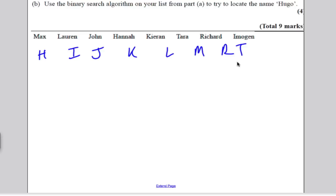Here was my list. I better write out what they mean, or I might think H was Hugo. So H is Hannah, I'm going to write Hannah, I is Imogen, J is John, K is Kieran, L is Lauren, M was Max, R was Richard, and T was Tara.